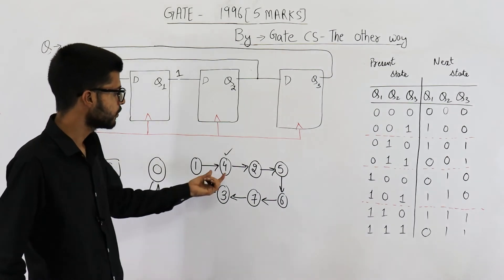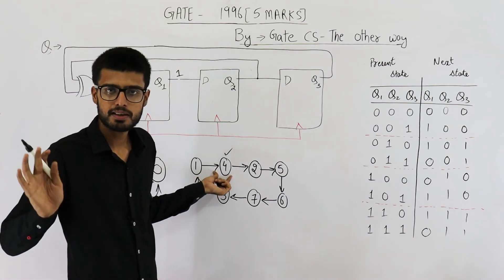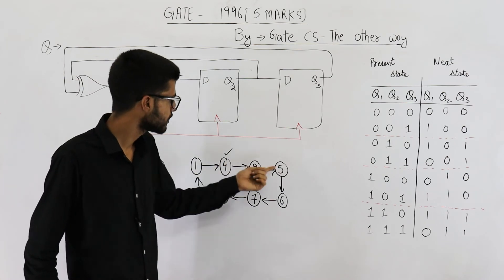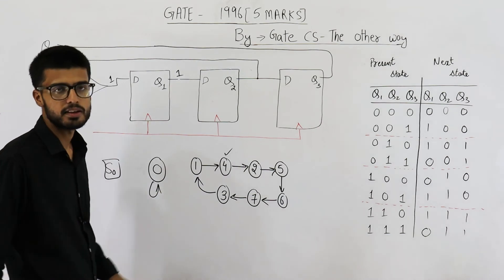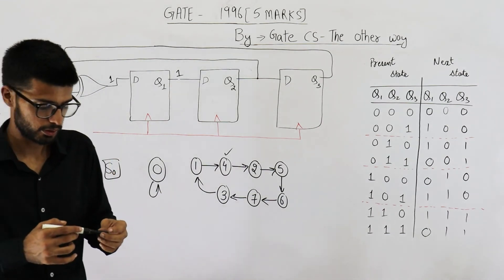Because you just keep on giving as many clock signals you want, you will just keep on looping between these states only. You will never reach state 0. So your answer to B part is S0.